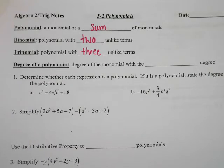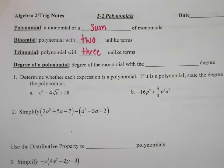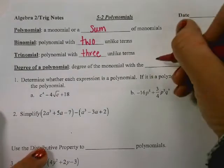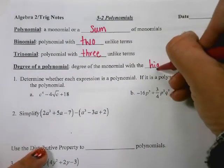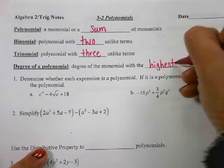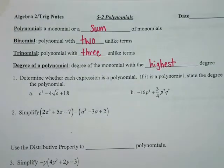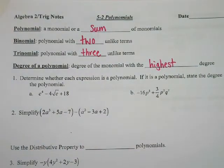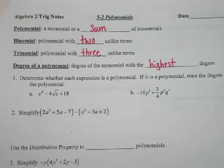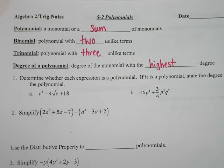The degree of the polynomial is the degree of the monomial with the highest degree — so we're going to look at each term individually. This time we have to determine, first of all, if it's a polynomial, and then we decide its degree.